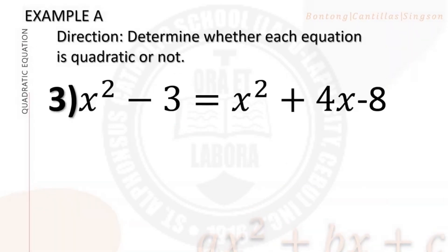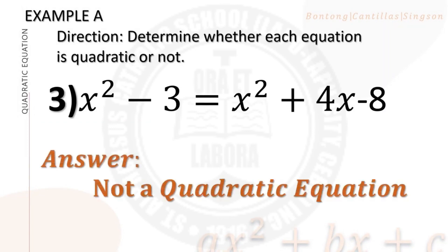Number 3: x squared minus 3 equals x squared plus 4x minus 8. This is not a quadratic equation because even though the term with the highest exponent is x squared, which is on degree 2, when you simplify, the highest exponent will be 1, found in the linear term 4x.